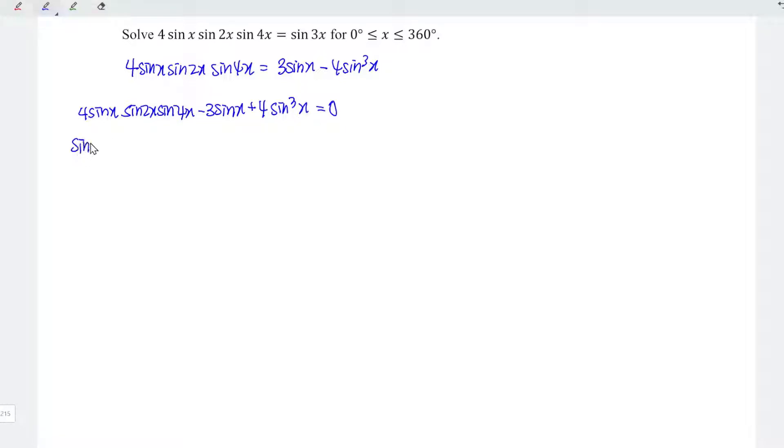Next is to factorize. So we take out sine x and we left 4 sine 2x sine 4x minus 3 plus 4 sine square x, and this is equal to 0. From here, we can see that we should have two sets of solutions. Firstly, sine x is equal to 0. Or secondly, we have 4 sine 2x sine 4x minus 3 plus 4 sine square x is equal to 0.